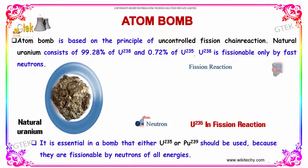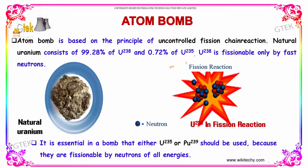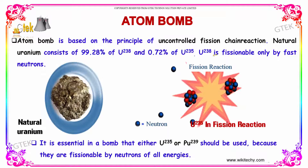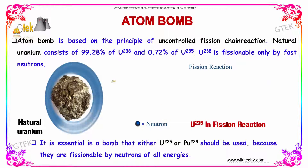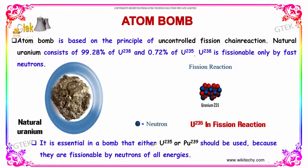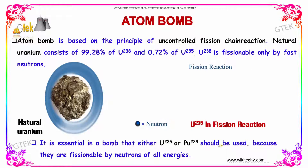Natural uranium consists of 99.28% uranium-238 and 0.72% uranium-235. Uranium-238 is fissionable only by fast neutrons, so in a bomb, either uranium-235 or plutonium-239 must be used because they are fissionable by neutrons of any energy.